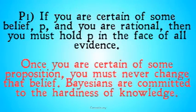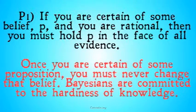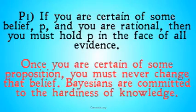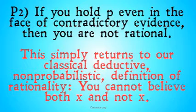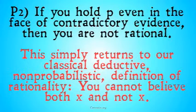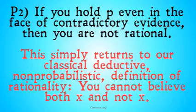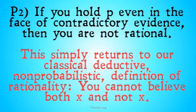Once you are certain of a proposition, you must never change that belief. Bayesians are committed to the hardiness of knowledge, which we saw in the original video on the paradox of dogmatism — denying that hardiness was how the normal epistemist escaped the paradox. Our justification for premise two is shorter, as it returns to the classic deductive, non-probabilistic definition of rationality: you can't believe both X and not-X. If you believe P in the face of not-P, you're irrational. It would be interesting for someone to offer a Bayesian epistemology based on non-classical logic, though all current forms are committed to classical logic.